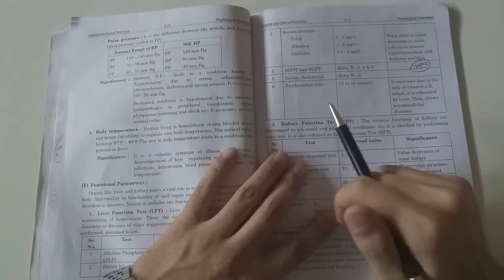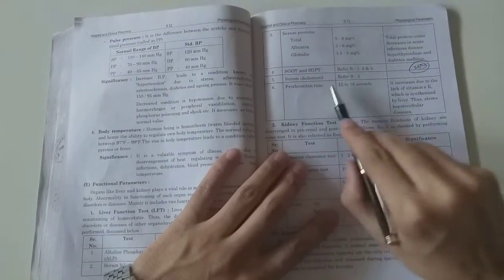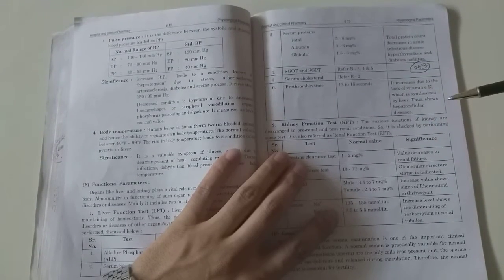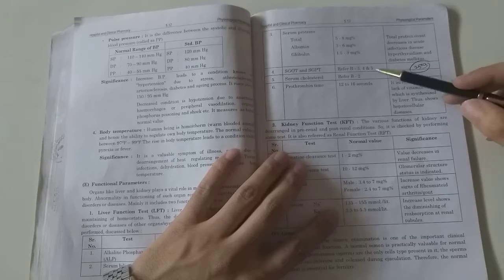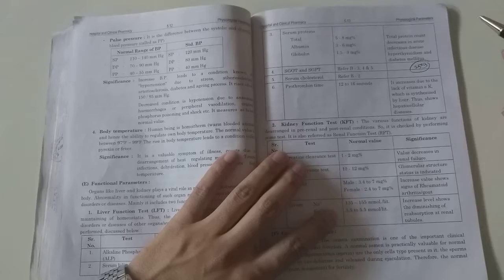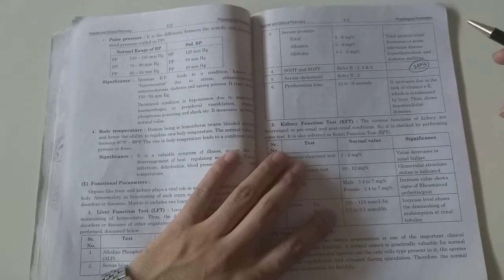Prothrombin time measures how much time blood takes to clot. If it takes more time, it increases due to lack of vitamin K. If blood clotting takes more time, it means vitamin K deficiency.